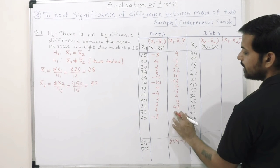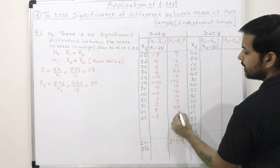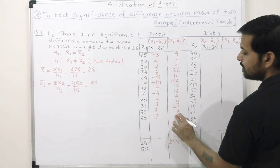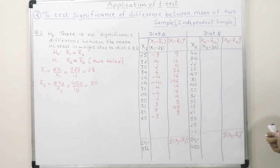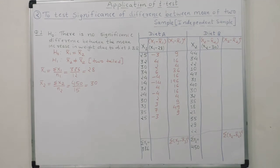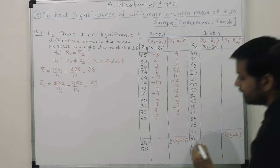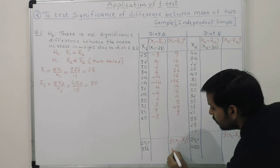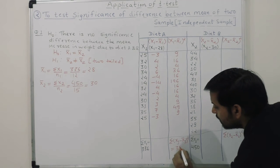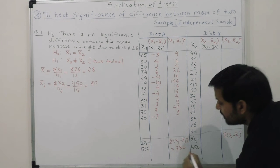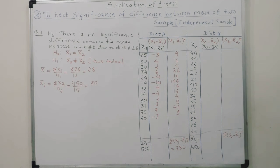After totaling all the squared deviations for diet A, the value Σ(x1 minus x̄1)² comes to 380.